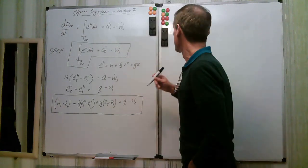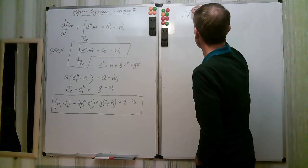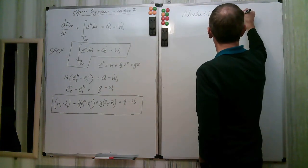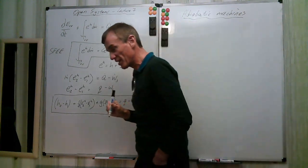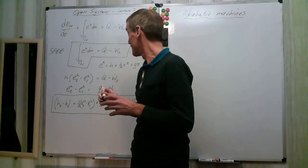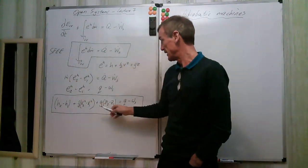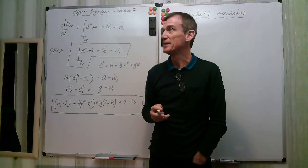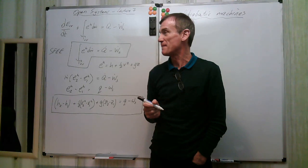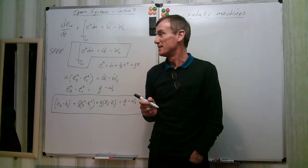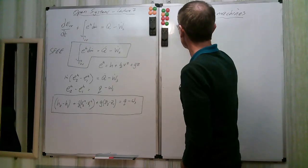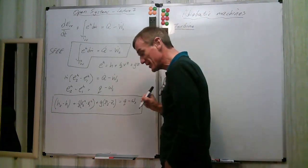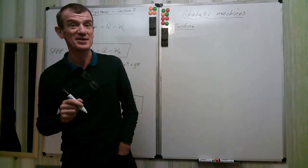What about adiabatic machines? There are quite a number to consider. Let's start by applying the steady flow energy equation to a turbine. A turbine is quite an important machine — its purpose is to produce work.